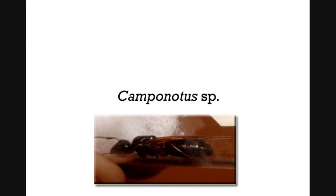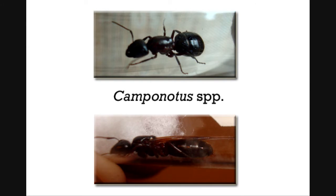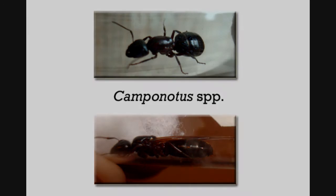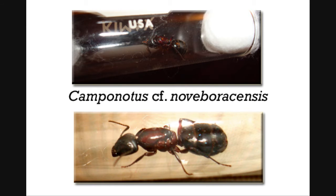The abbreviation 'spp.' is the plural form and indicates several species, so Camponotus spp. means two or more species of the genus Camponotus. Remember, these abbreviations are not italicized and are always lowercase. 'subsp.' or its plural form 'subspp.' are abbreviations used to indicate an unspecified subspecies; synonymous abbreviations are 'ssp.' and 'sspp.'